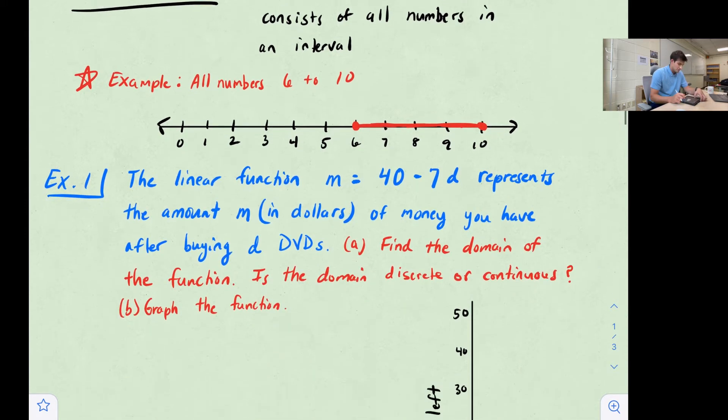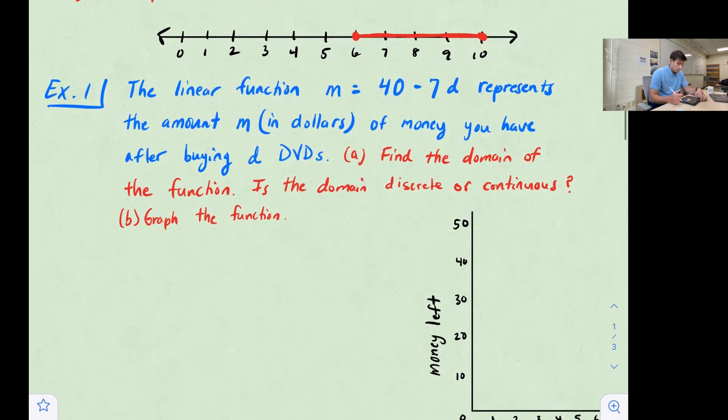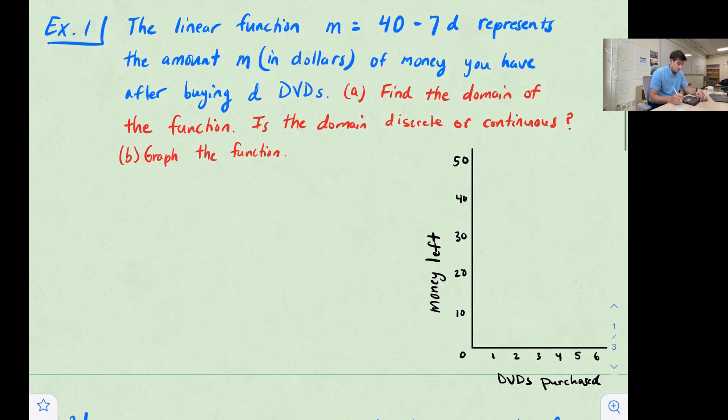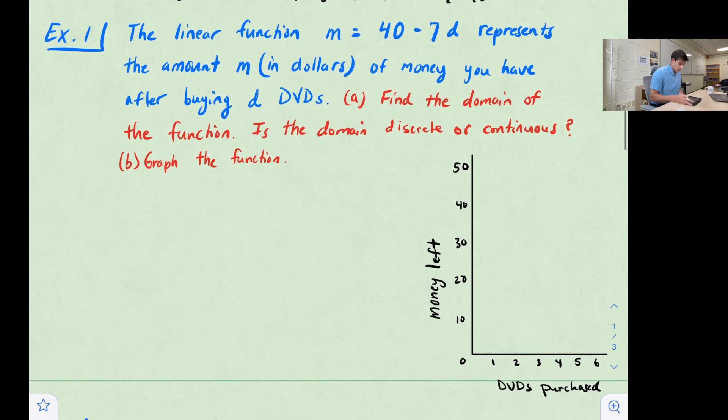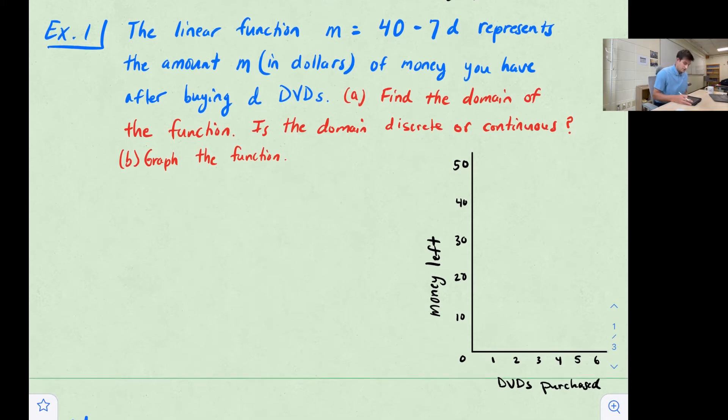We're going to look at two examples of word problems where they ask us to find the domain and then tell if the domain is discrete or continuous, and then we'll also draw a graph of the function. So example one says the linear function M = 40 - 7D represents the amount M in dollars of money you have after buying D DVDs. So they want us to find the domain of the function, tell if the domain is discrete or continuous, and then graph the function.